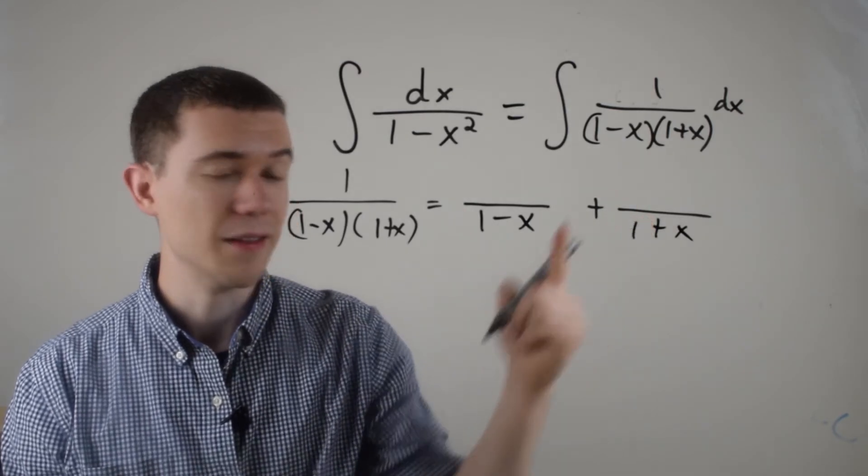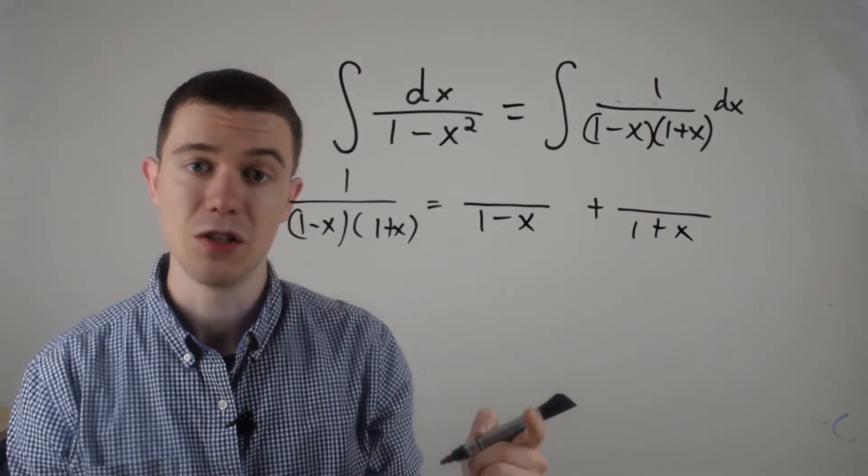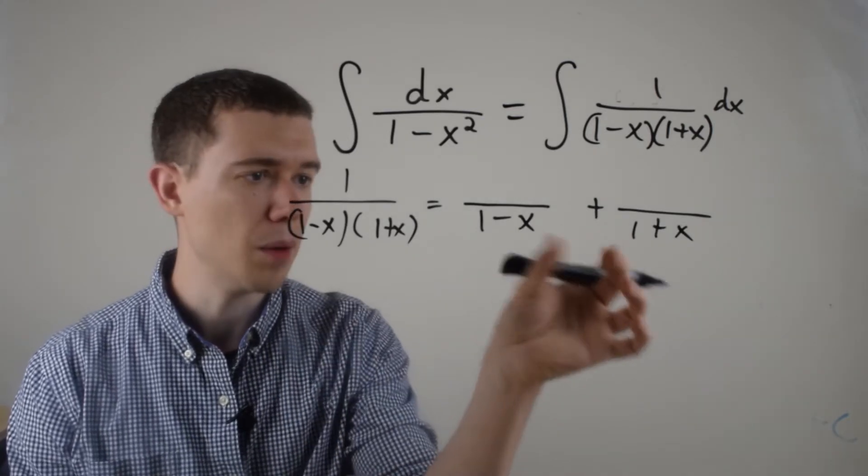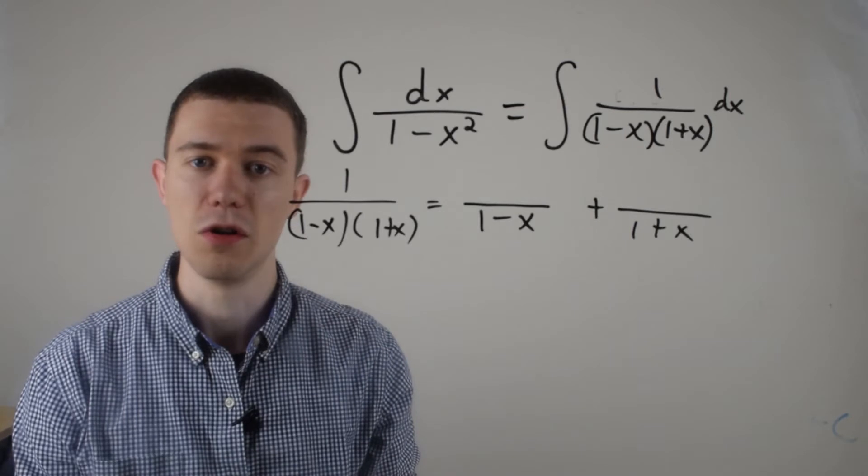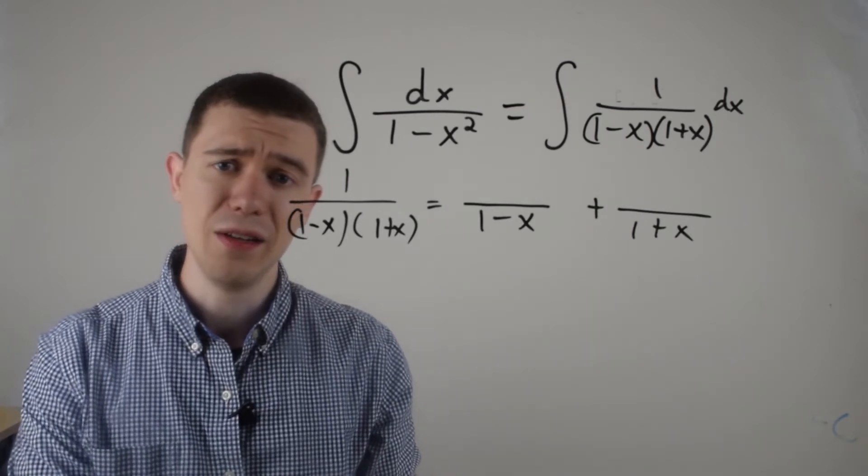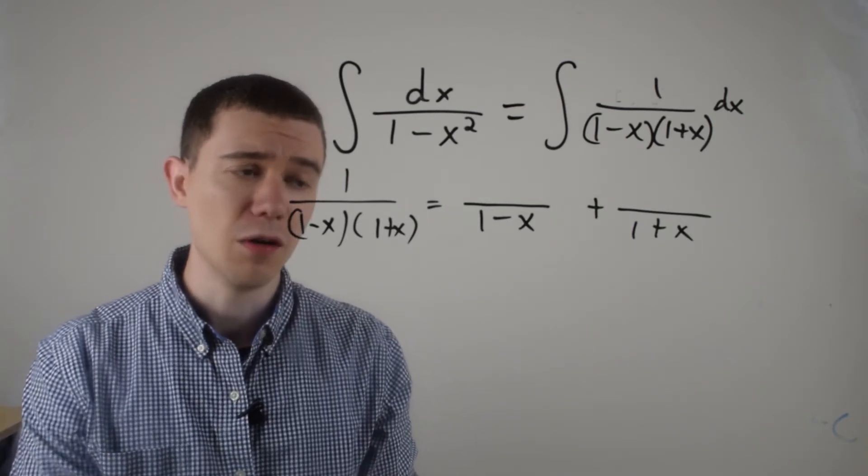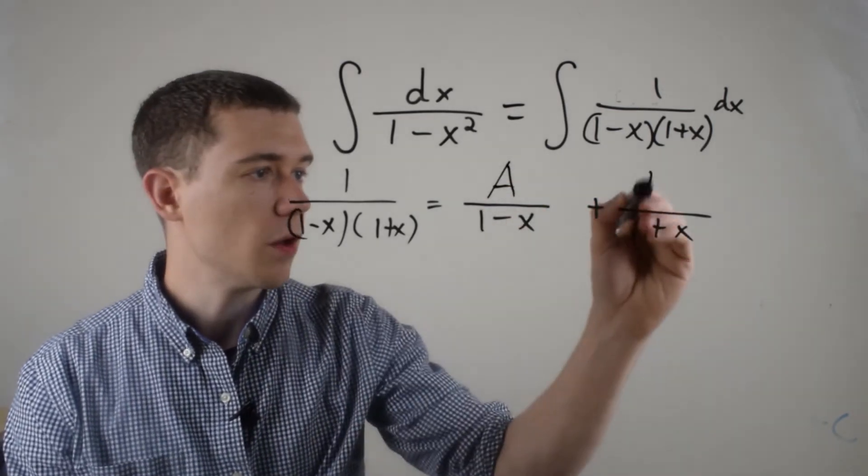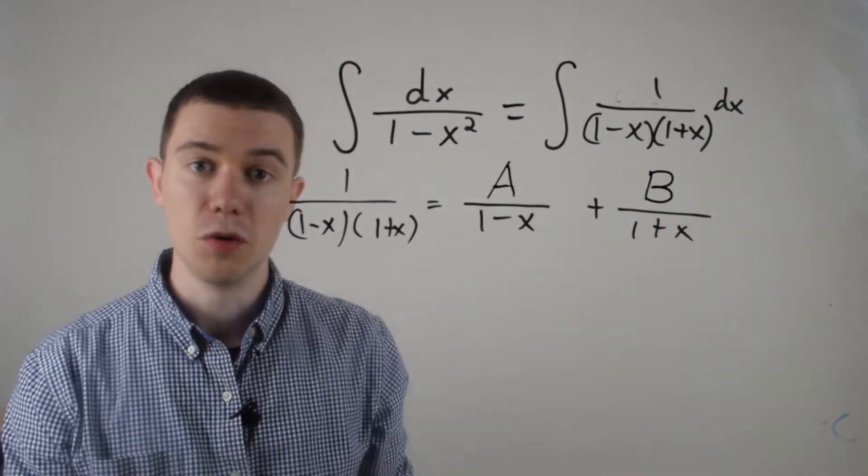And my claim is that this fraction here should break apart into two different fractions, having the first denominator as the first fraction, and the second denominator in the second fraction. There should be some way to do this such that if I combine these fractions, I'd get what I started with. Now, I don't know exactly what it is. That's what I'm trying to figure out. So on top, I'm just going to call this A. I don't know what it is. And on the other one, I'll call this B. I'm not sure what it is.